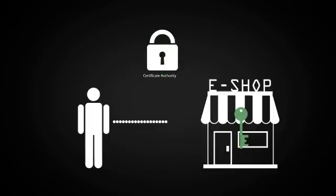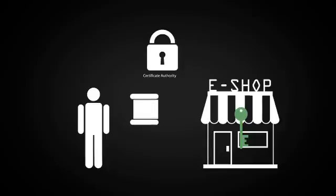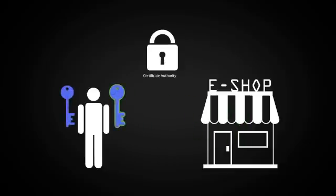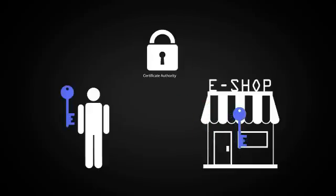When you visit a site with an SSL certificate, the browser requests the certificate. Once it receives and verifies this, it generates a piece of code called a master key and encrypts it using the public key associated with the certificate. It then sends the encrypted master key back to the site's server. The secure handshake is now complete.